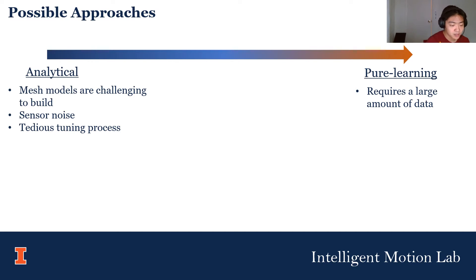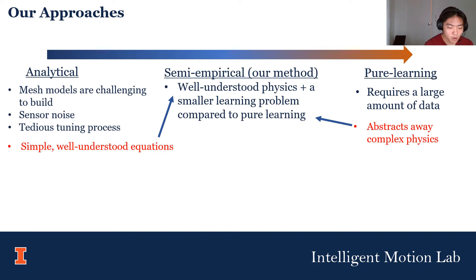On the other hand, machine learning methods gather empirical data from experience, but don't generalize well outside of the scenario distribution. Our method combines benefits of both worlds. We learn the most challenging parts of behavior from data, but use physics to handle the parts that are better understood.